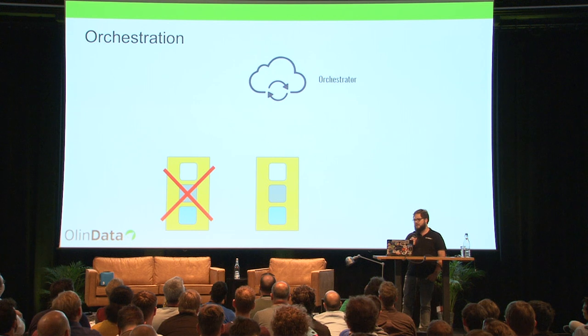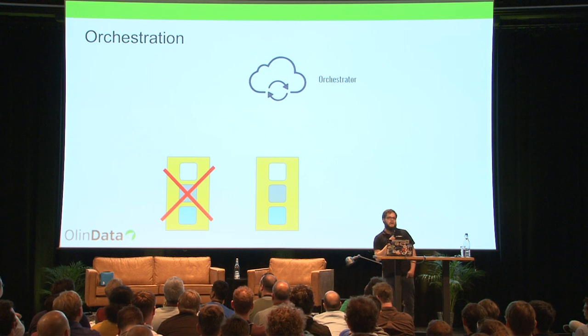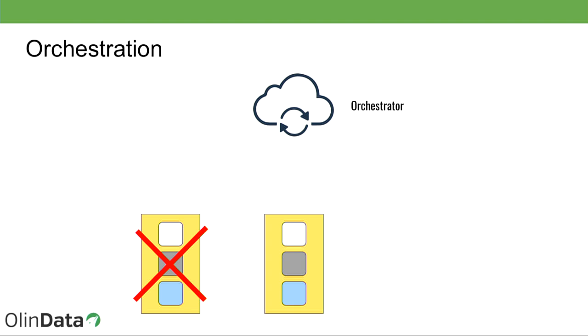To do these kinds of things, you need some kind of orchestration. Most major cloud providers give you tools to build orchestration yourself, but at some point you want more advanced features or more portability. Other tools are available, like Nomad, Kubernetes, and Mesos.